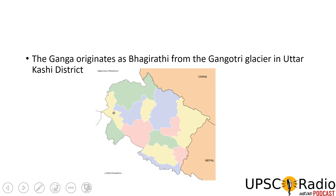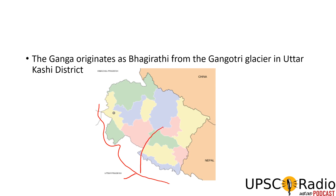The boundary between Uttarakhand and Uttar Pradesh — the Ganga flows generally through Uttar Pradesh, but its origin is in Uttarakhand, where Gangotri and Yamunotri originate. Let us understand Uttarakhand's boundaries: China on one side, Nepal on one side, Himachal Pradesh on one side, and Uttar Pradesh on one side.